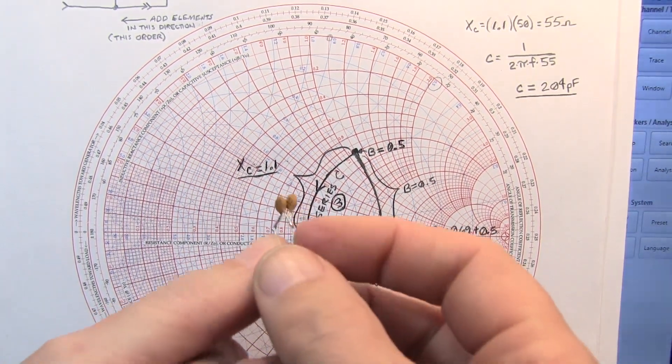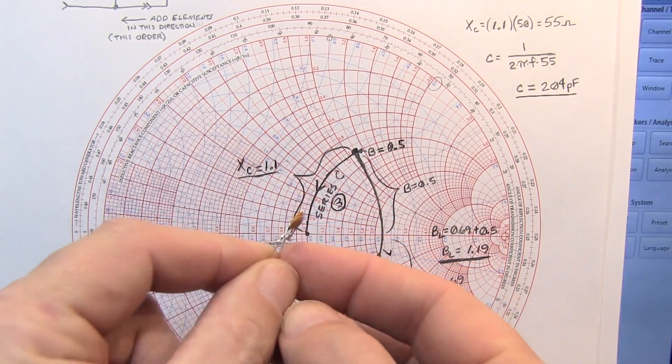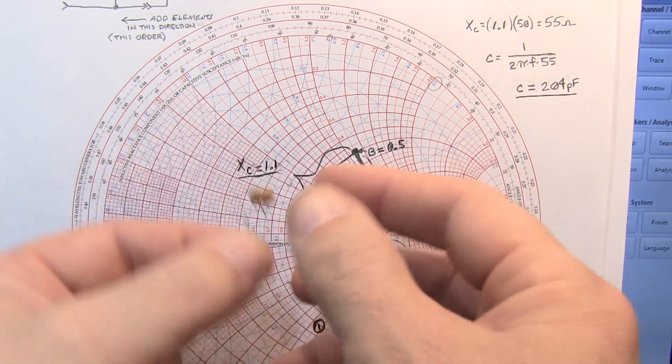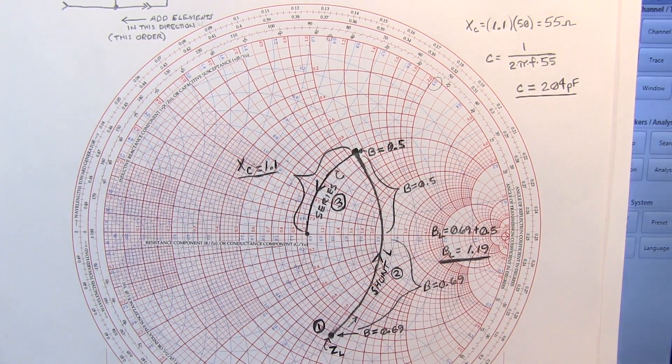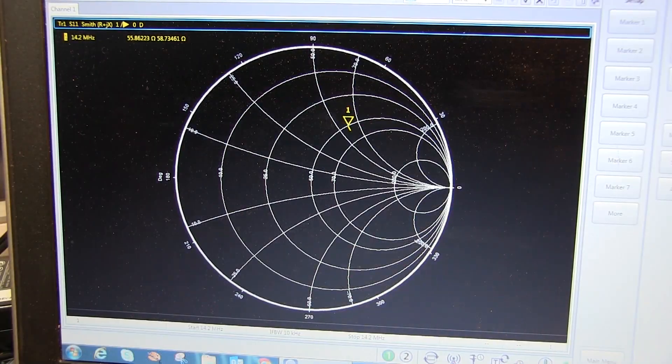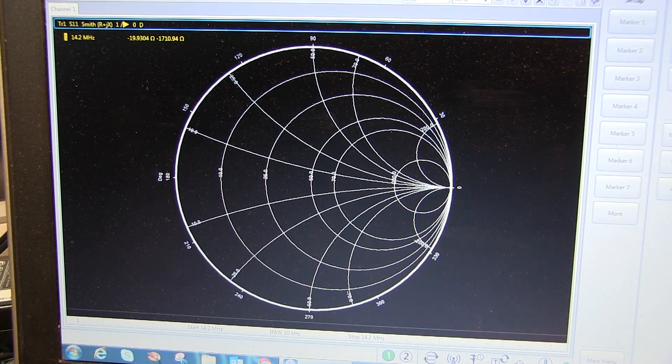So I've taken a pair of 100 picofarad capacitors and just soldered them in parallel. And let's put that in series with our network to complete the L network and that should rotate us right into the center of the Smith chart. All right, so I'll pull the little zero ohm jumper out that I have in the series position on my fixture and replace that with my 200 picofarad capacitor.